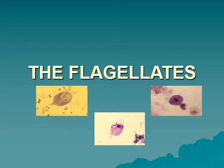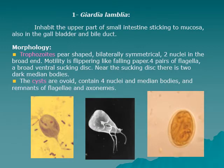The flagellate intestinal and luminal protozoa. The first and most important intestinal flagellate protozoa is Giardia lamblia. Giardia lamblia inhabits the upper part of the small intestine.